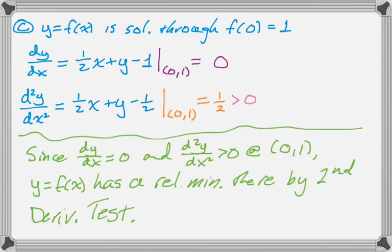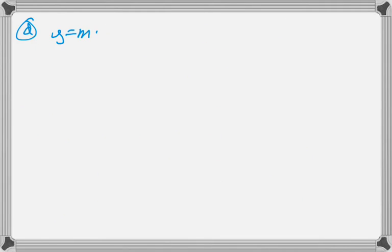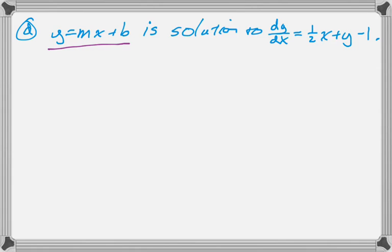Alright. Moving on to the last part. So what we're told here is that y equals mx plus b is a solution to the differential equation. And what I want to do is I want to solve for m and for b. And I'm going to do that by equating coefficients.